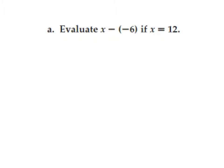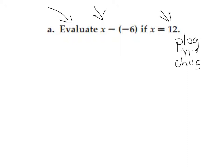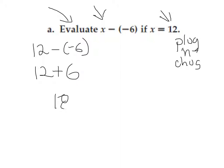We are now at our second objective: evaluate. Evaluate x minus negative 6 if x equals 12. I like to think of this as plug and chug — wherever there's an x, I substitute it with 12. So we have 12 minus negative 6. Using the additive inverse: 12 plus the opposite of negative 6, which is positive 6. Both signs are positive, so I add: 12 plus 6 is 18. The largest absolute value is 12 and the sign is positive, so 18 stays positive.